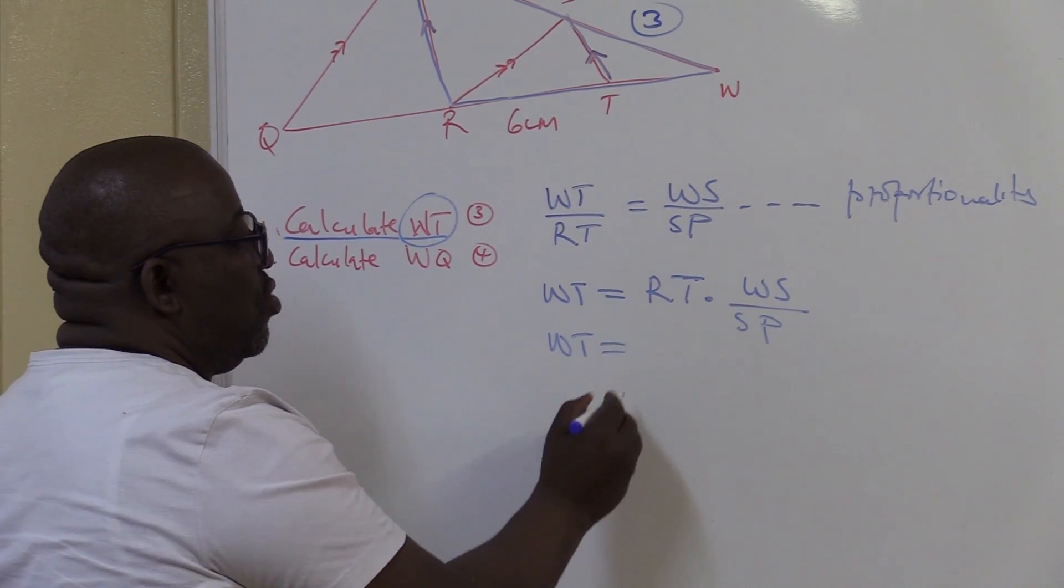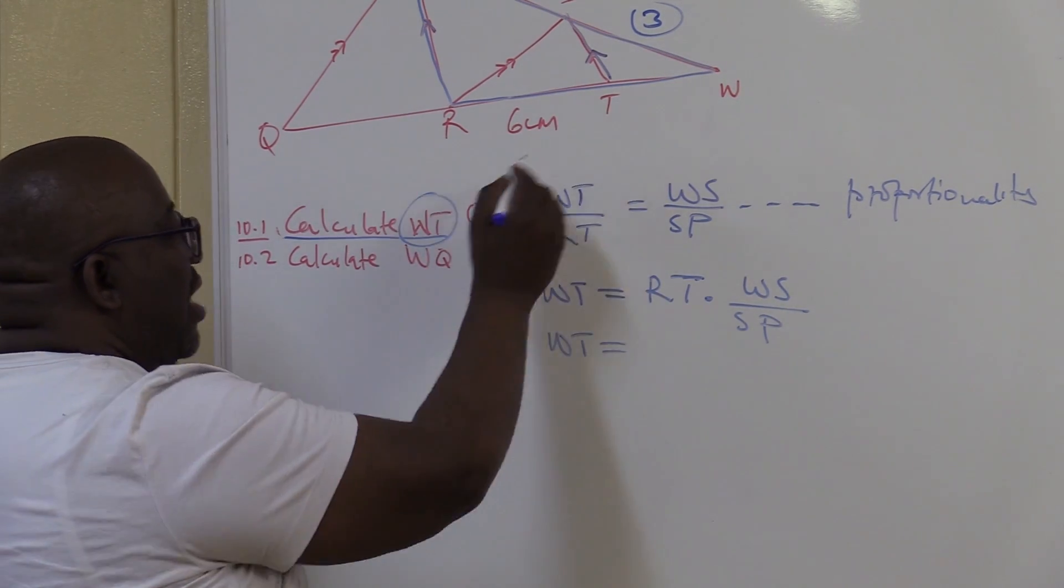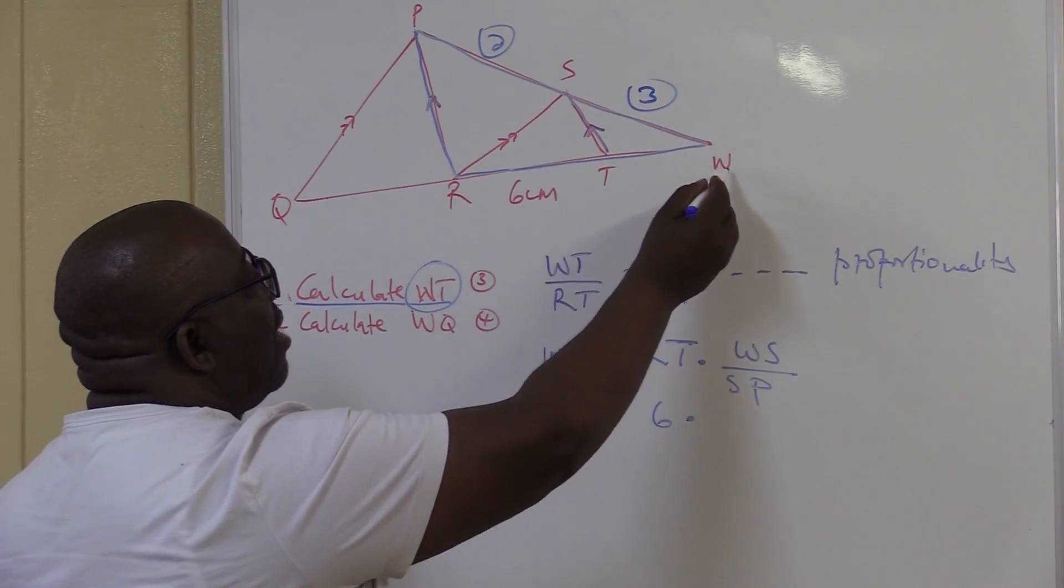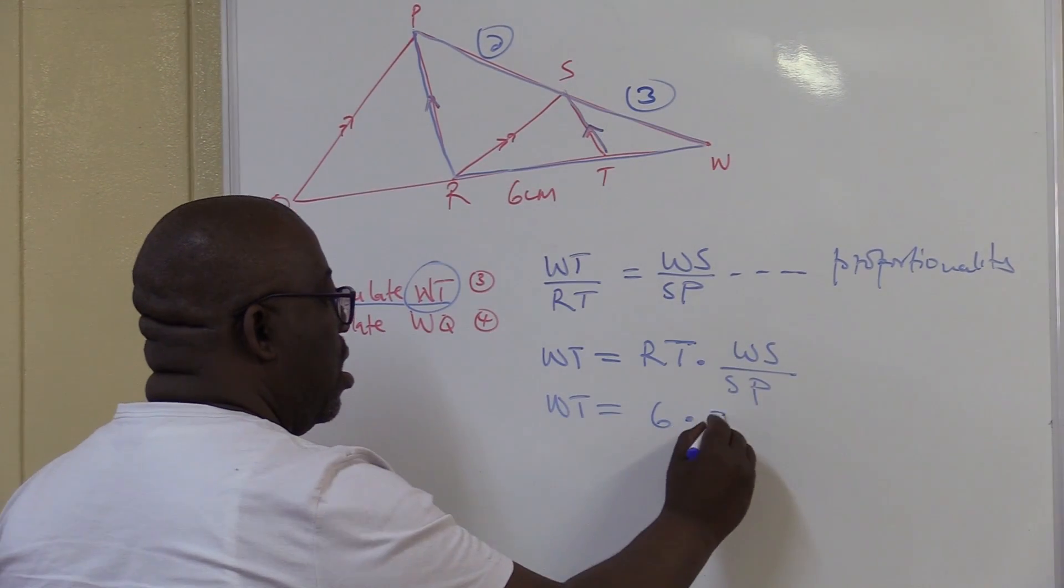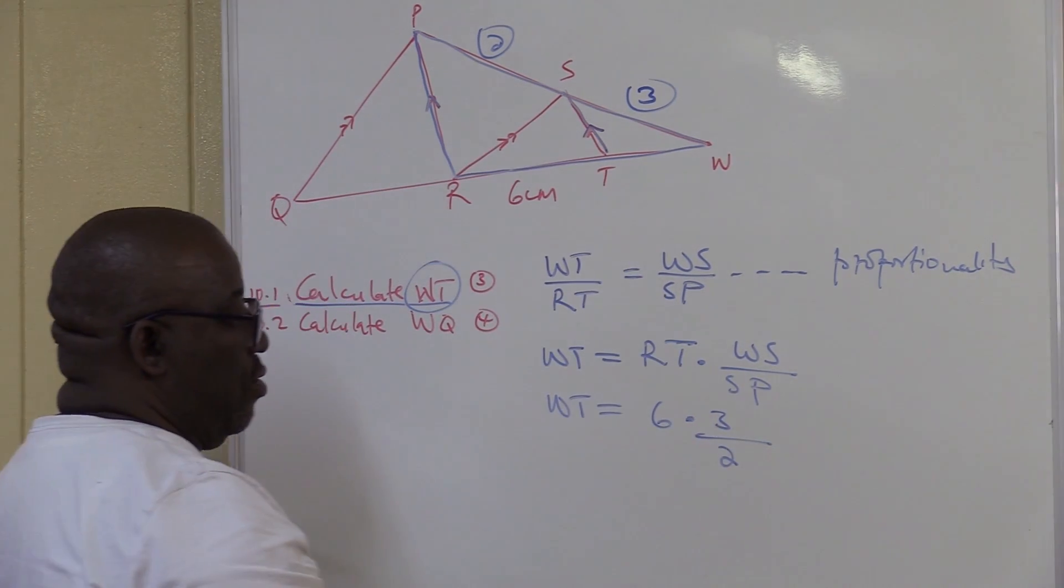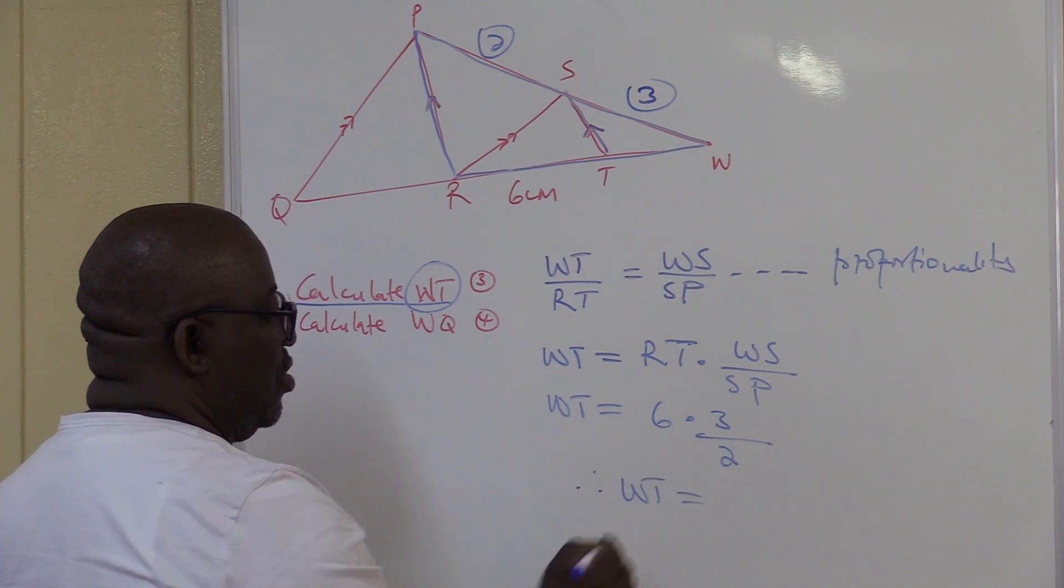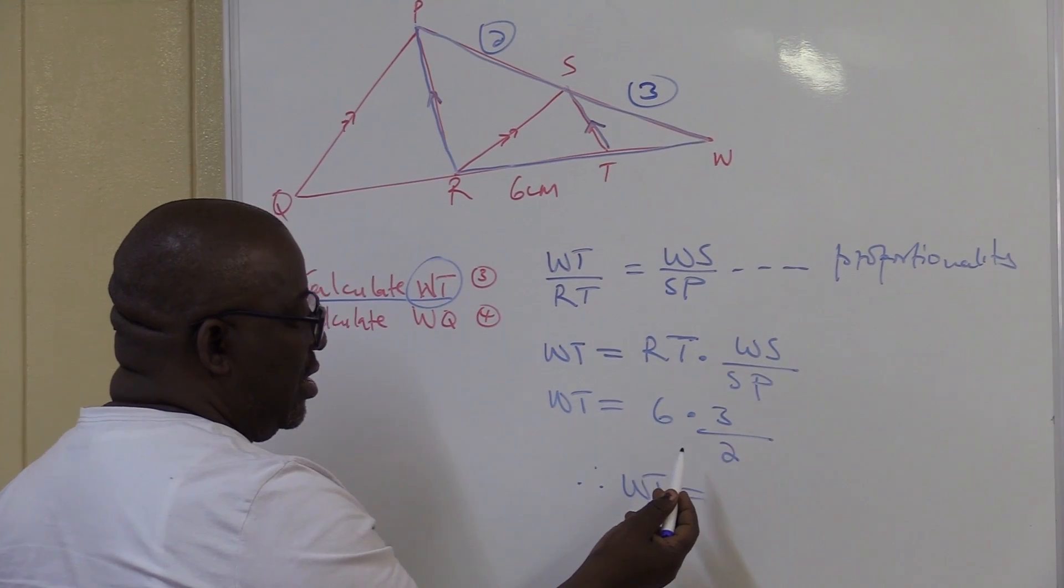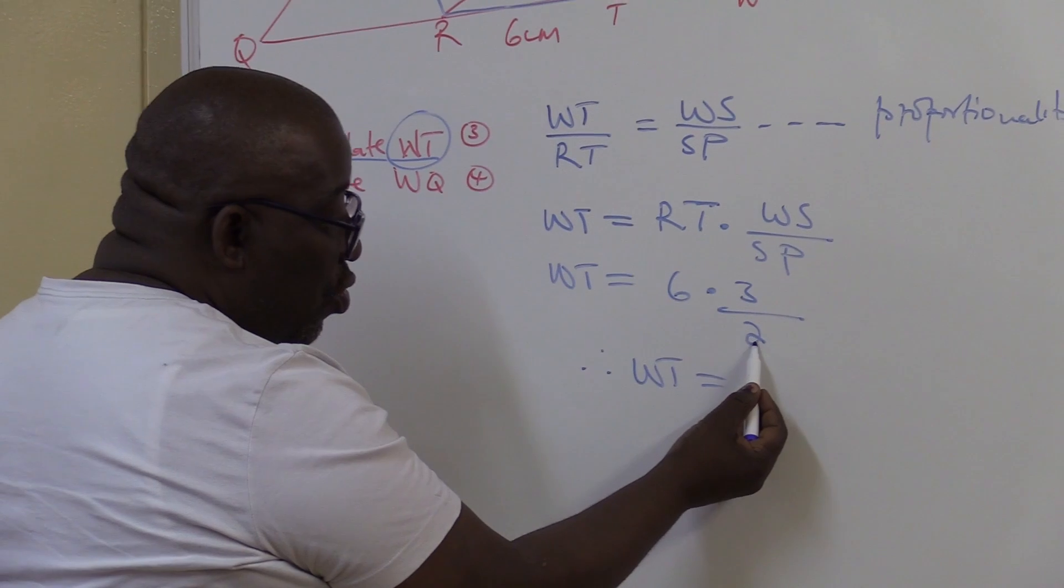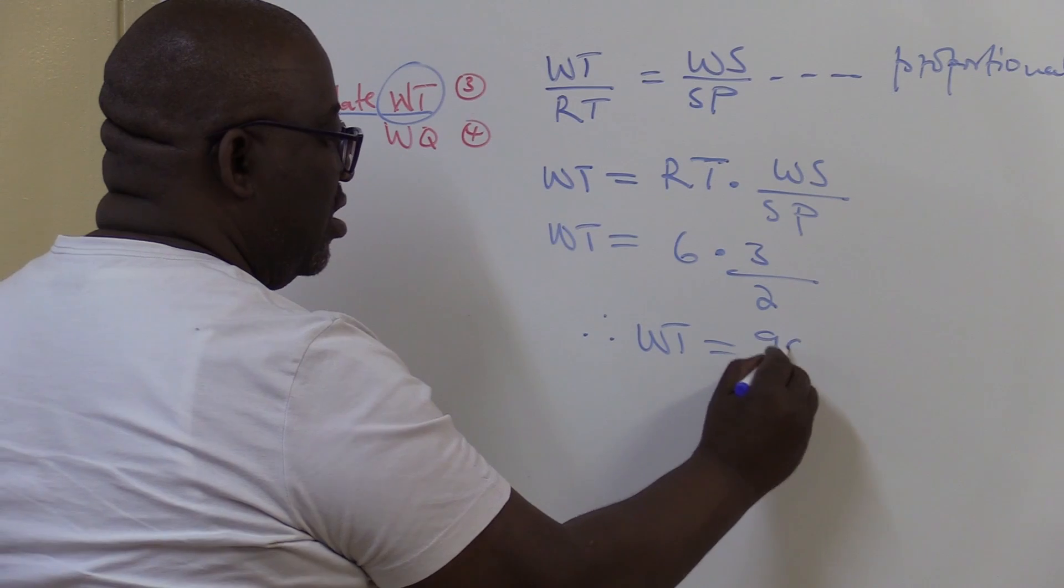Hence, WT will be equal to... Do I see anything on RT? RT, I see 6. Times WS, what do I see in WS? I see 3, over SP. What do I see in SP? I see 2. Therefore, WT will be equal to 6 times 3 is 18. 2 into 6 equals 3 times, 3 times 3 is 9. So it's 9 centimeters.